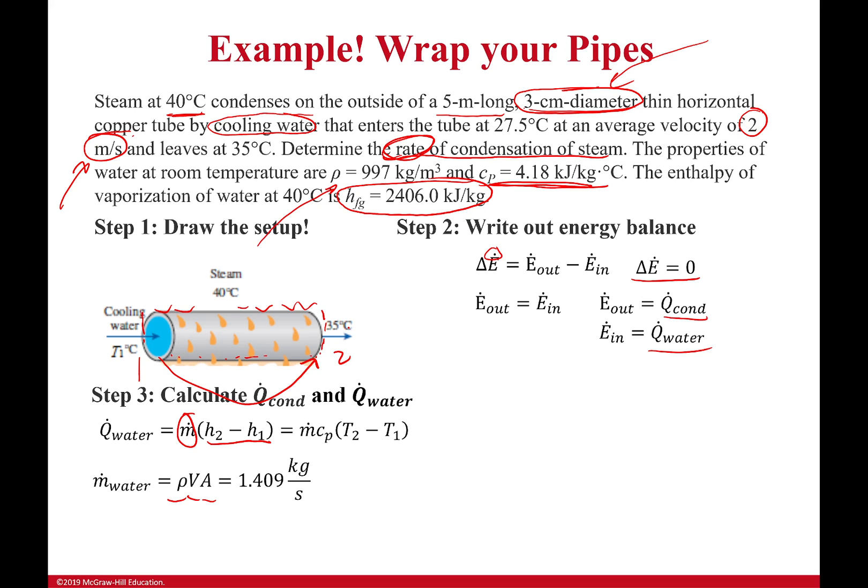Using that, I can get my overall mass flow rate of 1.409 kilograms per second. Just so you know, this diameter right here, we're using the whole pi d squared over 4 equation to get my area. I need to convert that from 3 centimeters to 0.03 meters to make sure I have the right units at the end.